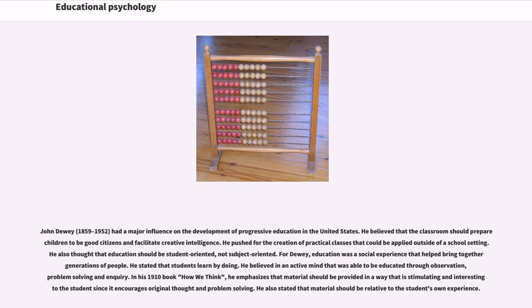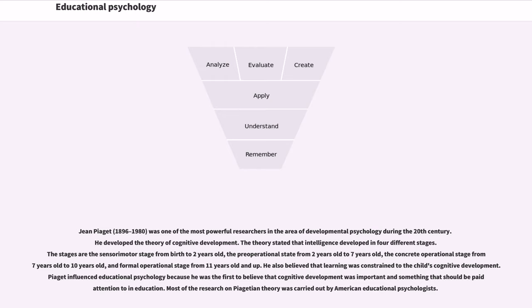Jean Piaget (1896–1980) was one of the most powerful researchers in developmental psychology during the 20th century. He developed the theory of cognitive development, stating that intelligence developed in four stages: the sensorimotor stage (birth to 2 years), the pre-operational stage (2 to 7 years), the concrete operational stage (7 to 10 years), and the formal operational stage (11 years and up). He believed that learning was constrained by the child's cognitive development, and he was the first to assert that cognitive development was important and should be paid attention to in education.